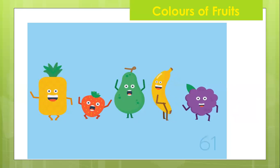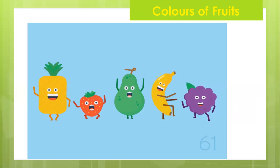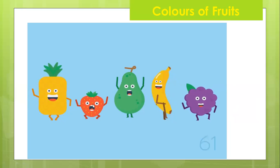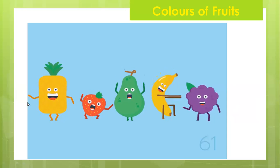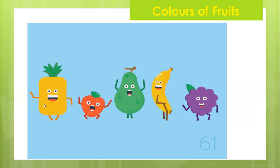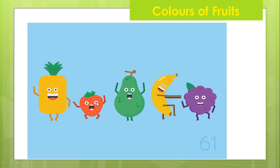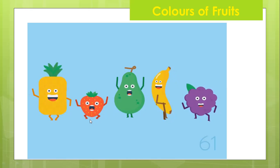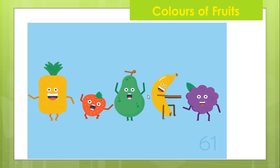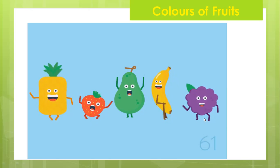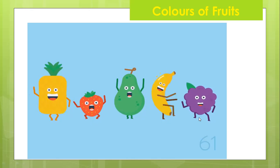Let's learn about the color of fruits. All the fruits have different colors. For example, we have yellow pineapples. We have red strawberries. We have green avocado. We have yellow bananas. And we have purple berries.